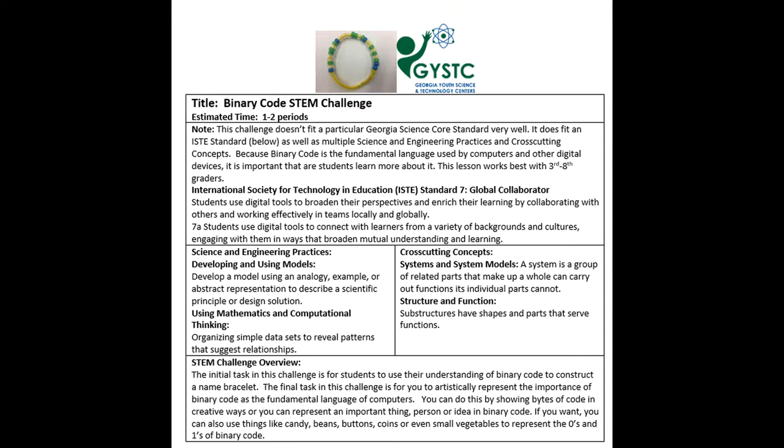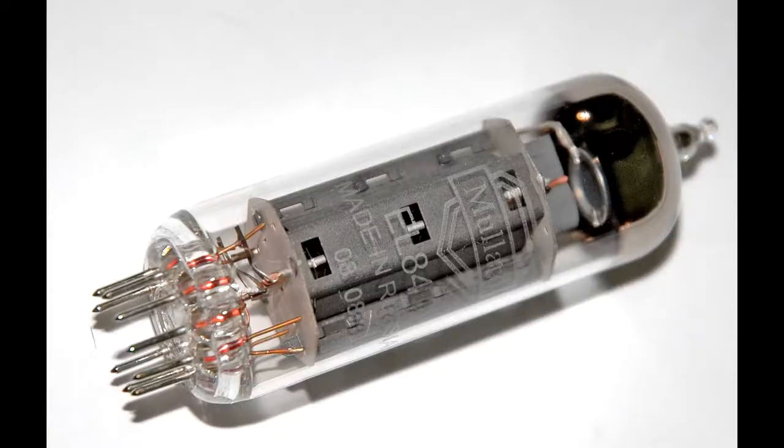About 50 years ago we invented something called the vacuum tube. A vacuum tube allows electricity to flow through it while it turns on and off in patterns.